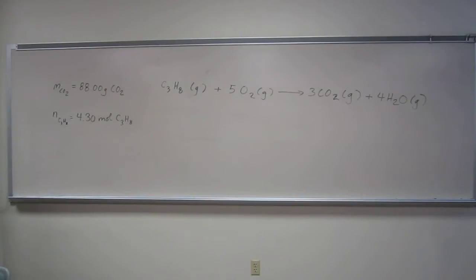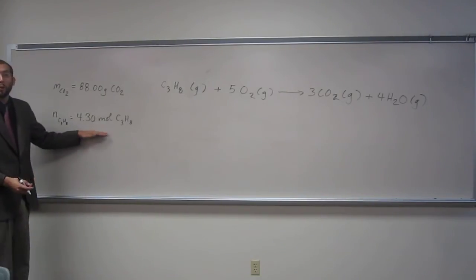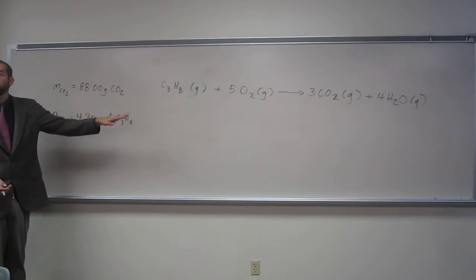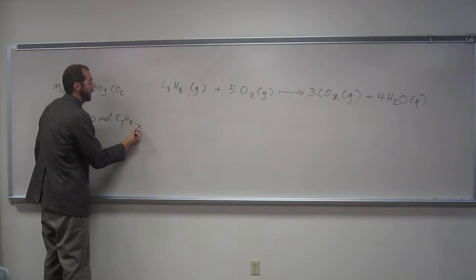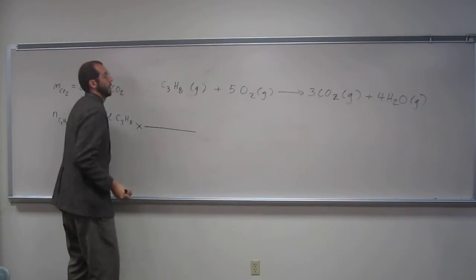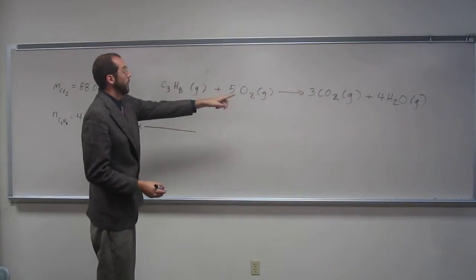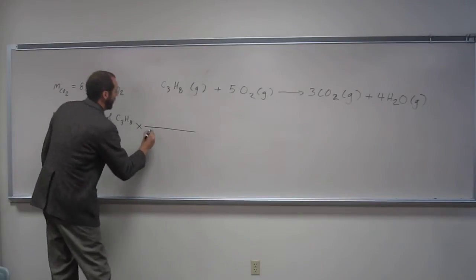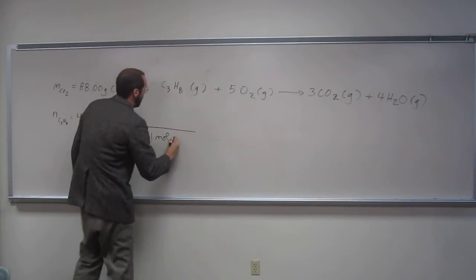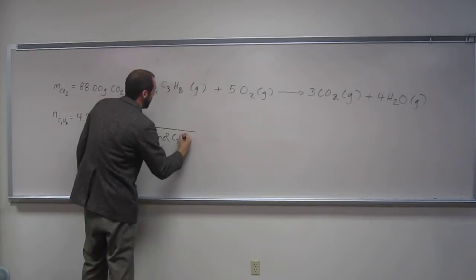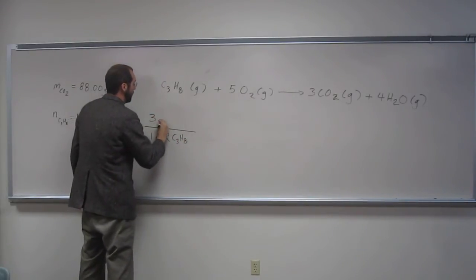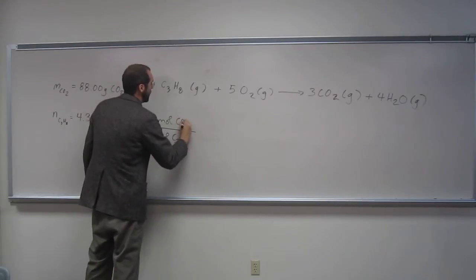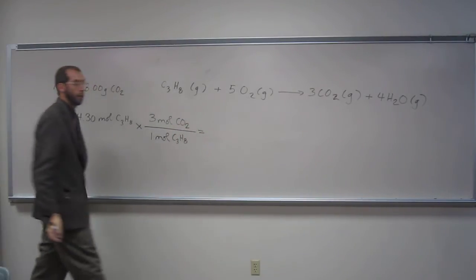The first thing we've got to do is convert moles of propane to moles of carbon dioxide. So, in order to do that, we say there's a 3 to 2 ratio there. So, 1 mole of C3H8 is equivalent to 3 moles CO2.